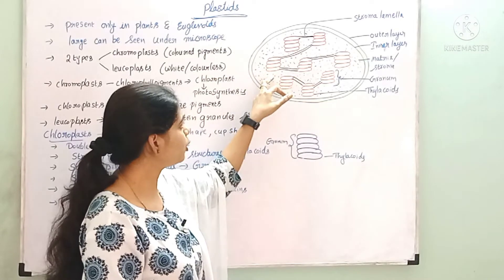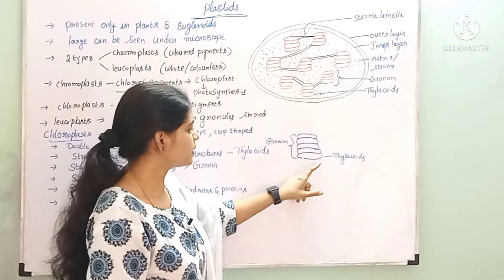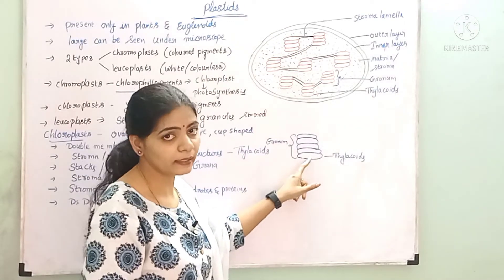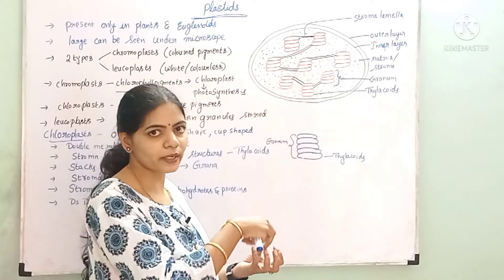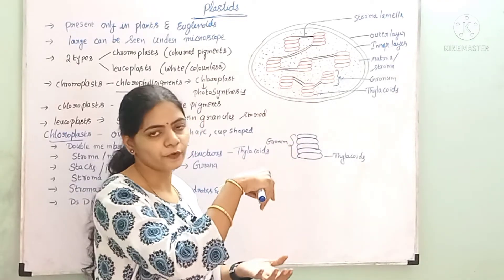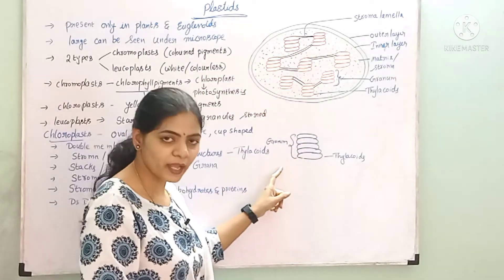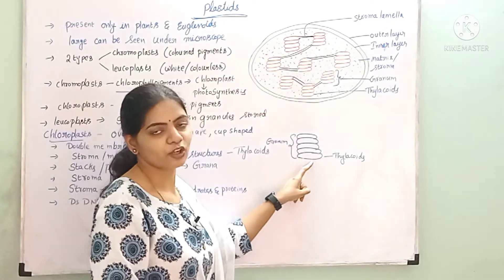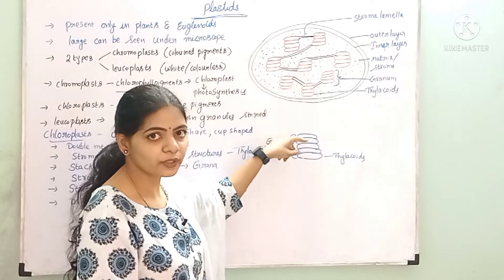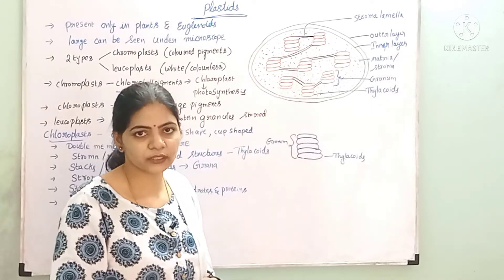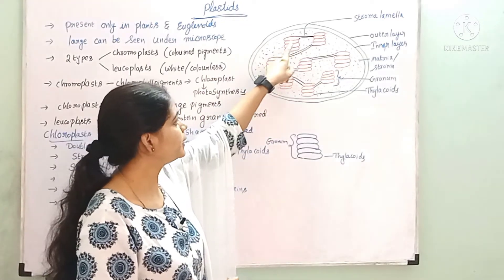And in this stroma, we have flat disc-like structures called thylakoids. These thylakoids are stacked like piles of coins — individually they are called thylakoids, and when arranged one on top of another, the stacks of thylakoids are called granum.